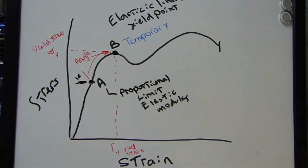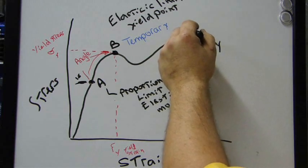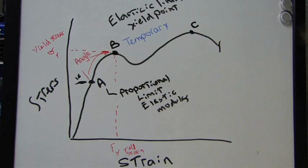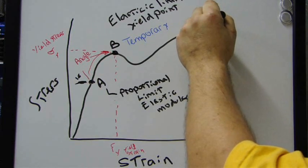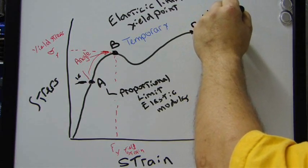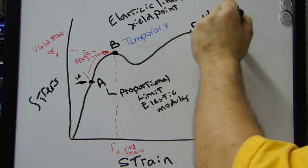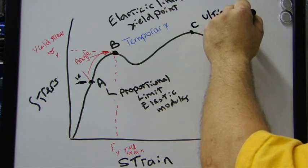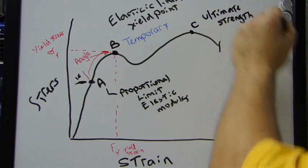Now, the next point to understand is right here. And this is, we'll call this one right up here, call this point C. Point C is very simple. It's the ultimate strength. Ultimate strength of the material.